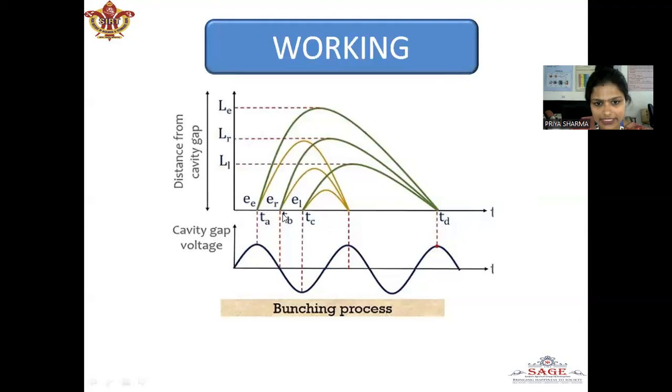Here you can see that the cavity voltage is going negative. Electron ER is unaffected by the gap voltage. This moves towards the repeller and gets reflected by the negative voltage on the repeller. It returns and passes through the gap for a second time.